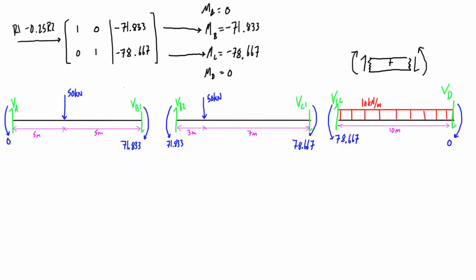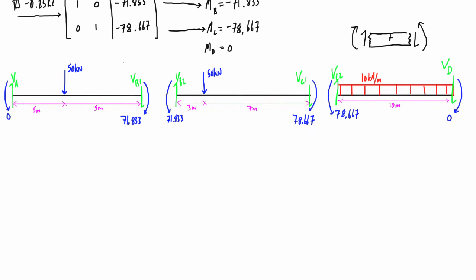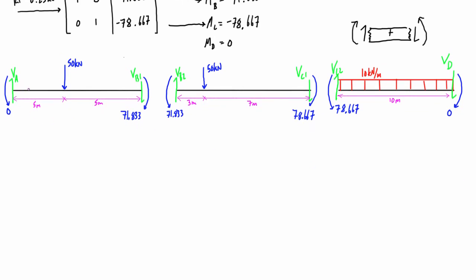So what we want to do now is we just want to do the sum of moments about some point for each of these to basically find one of the shears. Then we'll do sum of forces in the y direction to find the other shears. For the first section here, for span AB, we're going to find that VB1 is equal to negative 32.183 kilonewtons. So that negative sign indicates that it's actually going up or we're actually experiencing a negative internal shear, because it's opposite that positive sign convention.